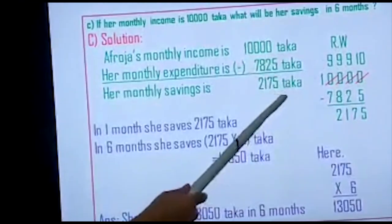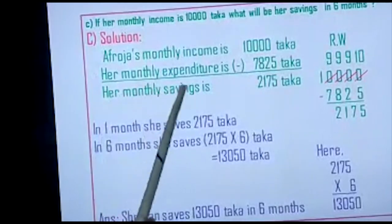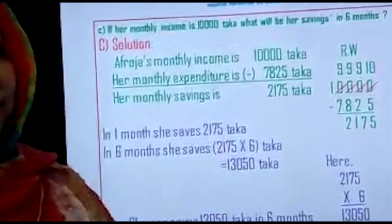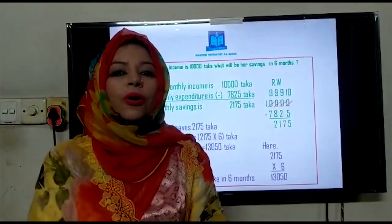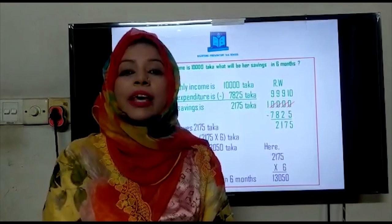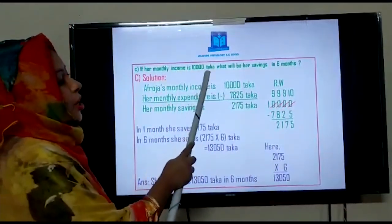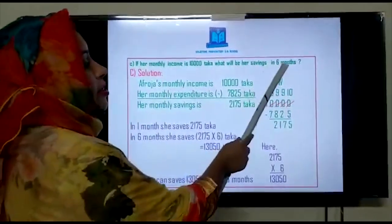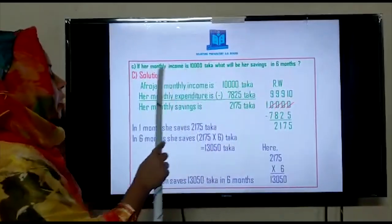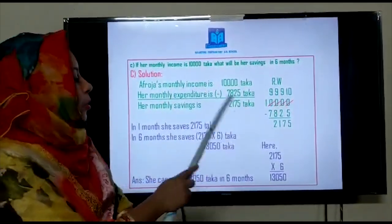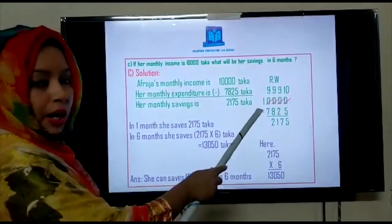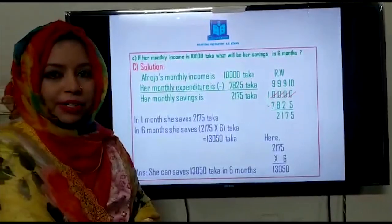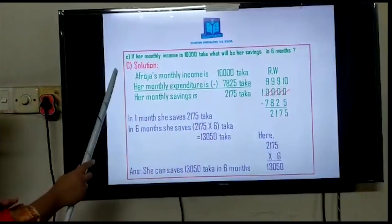I replace this answer in that part — her monthly savings is two thousand, one hundred seventy-five Taka. But students, this is not our final answer — we just found her monthly savings because the income part changed. We still have to find her savings in six months. Here we found only the one month savings: two thousand, one hundred seventy-five Taka. Now, since we have the one month savings, we can easily find the six months savings. It is again a multiplication problem.